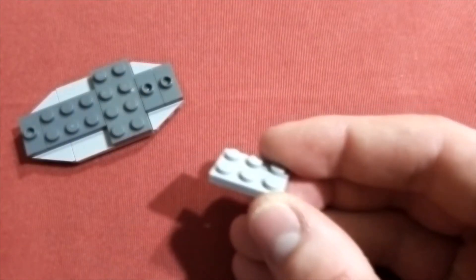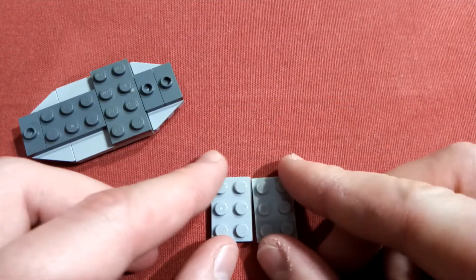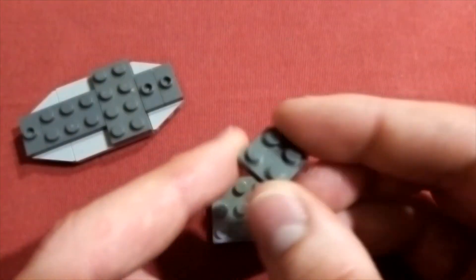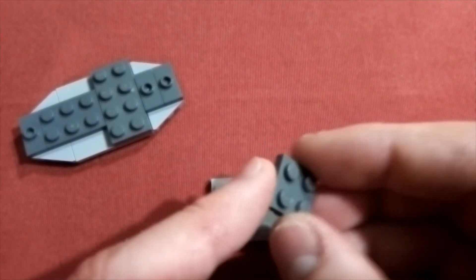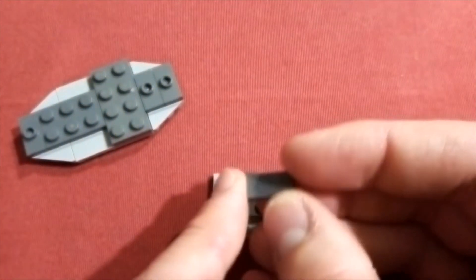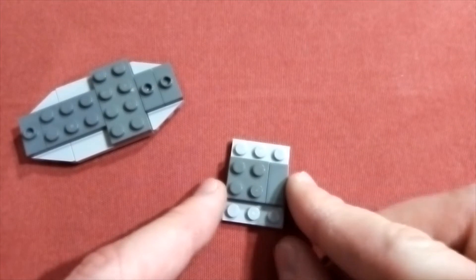Now you're going to take two of these 2x3 light bluish grey plates and put them next to each other like that. Put a 2x2 dark bluish grey plate on top joining them together. 1x2 dark bluish grey tile behind there, just like that.